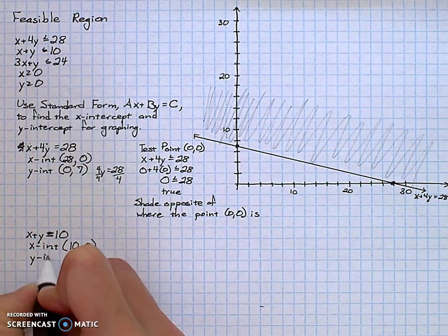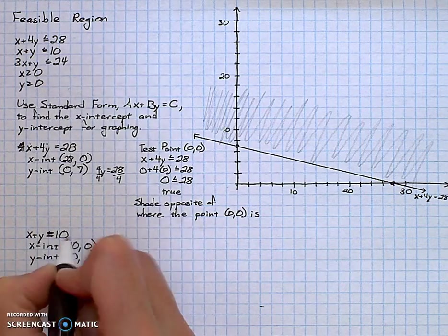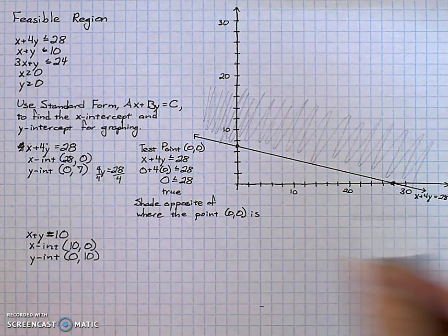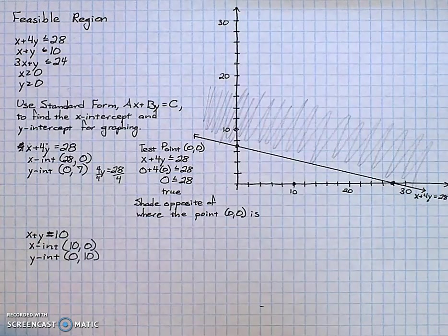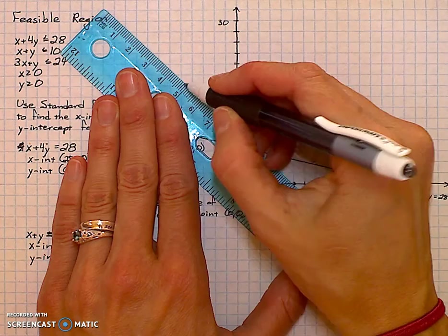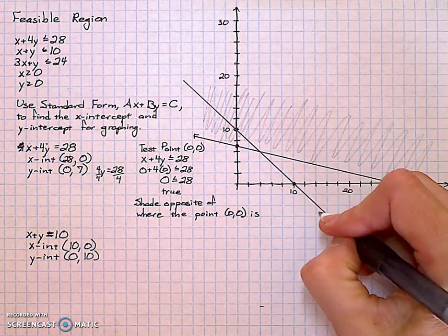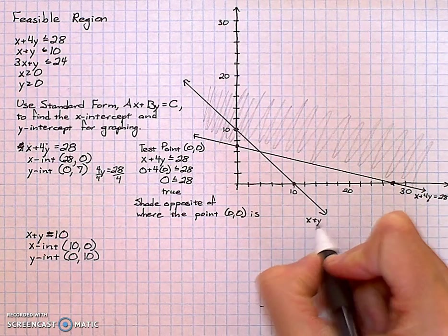Then I have the y-intercept. I substitute 0 in for x. I get y equals 10. My x-intercept occurs at 10. My y-intercept occurs at 10. I draw a straight line. I label my line. x plus y equals 10.